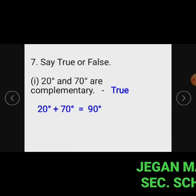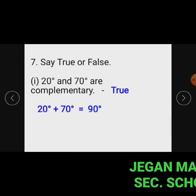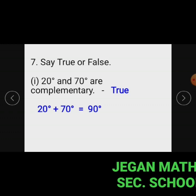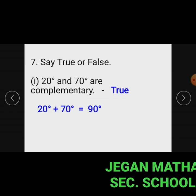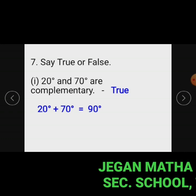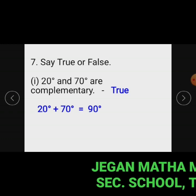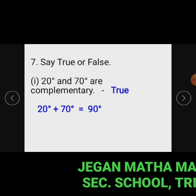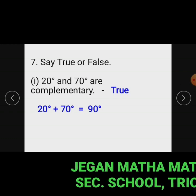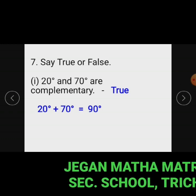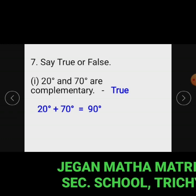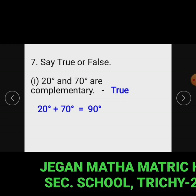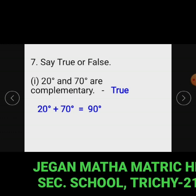Question number 7. Say true or false. Subdivision 1: 20 degrees and 70 degrees are complementary. Two angles are complementary when they add up to 90 degrees. In this problem, 20 degrees added with 70 degrees gives 90 degrees. So 20 degrees and 70 degrees are complementary to each other. The statement is true.